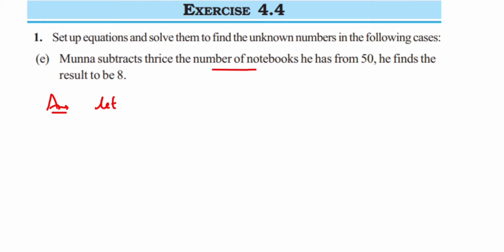So let's take number of notebooks equal to x. Now let's start framing the equation. What they are saying is Munna subtracts thrice the number—thrice means three times, so 3x. He's subtracting thrice the number of notebooks he has from 50, so from 50 he's subtracting 3x.